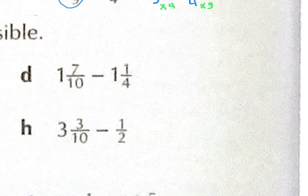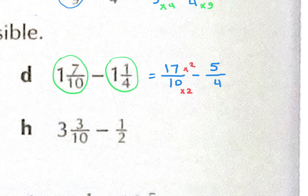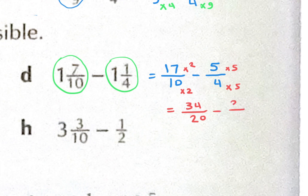Student Taline works on problem D: first, convert the mixed number to an improper fraction. 10 times 1 plus 7 gives 17 over 10. The second fraction is 5 over 4. For the denominator, 10 and 4 can share 20 as the lowest common denominator. Multiply 10 by 2 and 17 by 2; multiply 4 by 5 and 5 by 5. So 34 over 20 minus 25 over 20 equals 9 over 20. Good job!